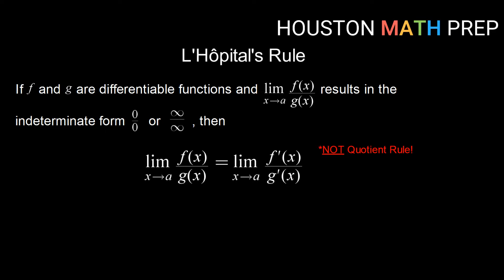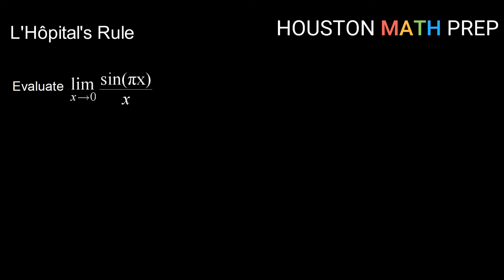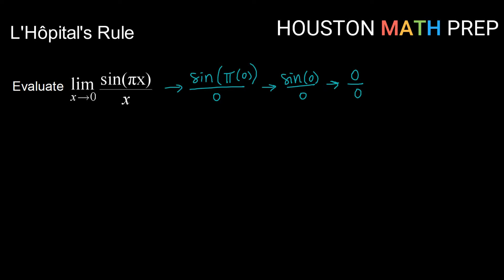Let's see it in action. Here we want to evaluate the limit as x goes to 0 of sin(πx)/x. First, let's try to evaluate at 0: that gives us sin(π·0)/0, which is sin(0)/0. From our unit circle we know sin(0) = 0, so we get 0/0 — one of our indeterminate forms. That means we can go ahead and apply L'Hôpital's rule.